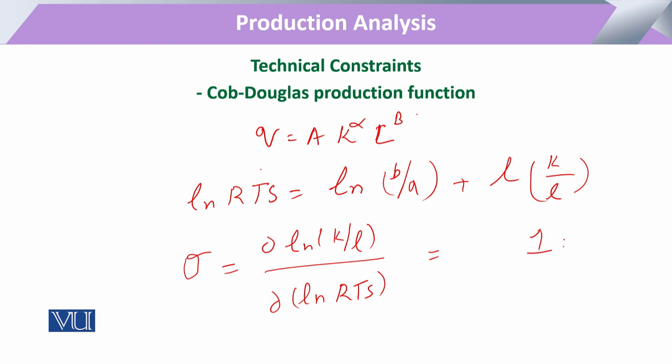This proves that the Cobb-Douglas production function has an elasticity of substitution equal to 1. Furthermore, with various values of alpha plus beta, we can obtain the three different types of returns to scale. Thank you.